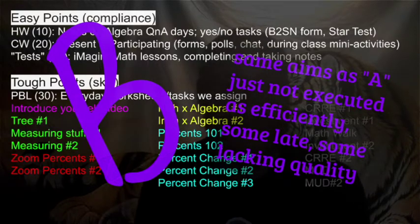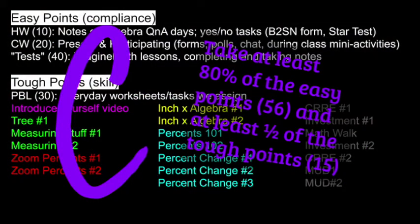If you're shooting for a C, my suggestion: 56 plus 15 is 71. So if you take at least 80% of the easy points and at least half of the tough points, you can be sitting at a letter C.